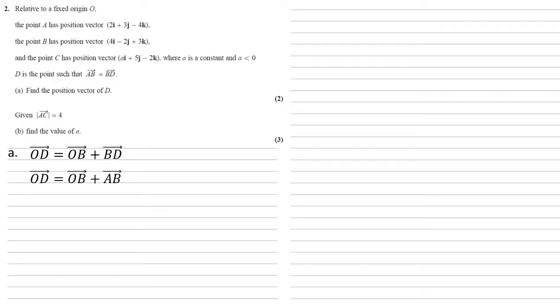And AB must equal OB minus OA, again by our rules of vectors. Now we know what OB and OA are from our question, so we can put them in.